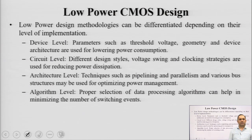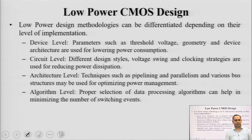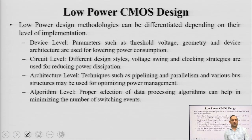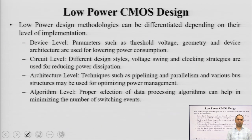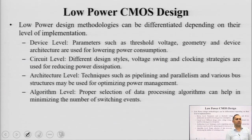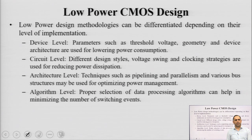At the architecture level, we have done an example of pipelining, where you design your overall system architecture so that in one clock cycle or a series of clock cycles, some processes take place in parallel instead of series — reducing time and power for better power management. At the algorithm level, you select your data processing algorithm so that the number of switching events — the number of times your circuit goes from 0 to 1 or 1 to 0 — is reduced, lowering the probability of power consumption.